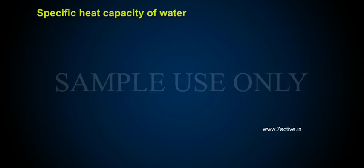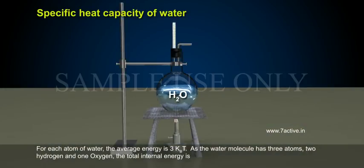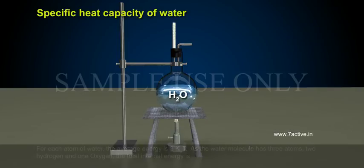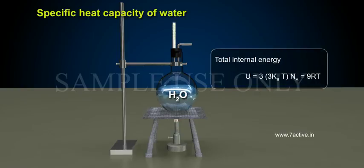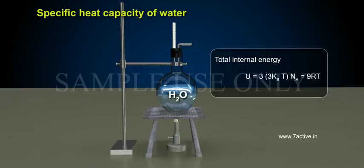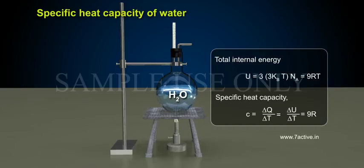Specific heat capacity of water. For each atom of water, the average energy is 3 k_B T. As the water molecule has three atoms — two hydrogen and one oxygen — the total internal energy is U = 3 × 3 k_B T × N_A = 9RT. And the specific heat capacity C = δQ/δT = δU/δT = 9R.